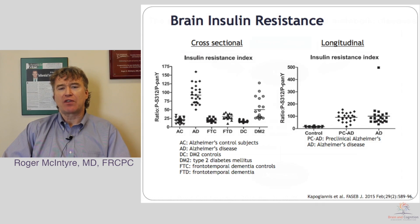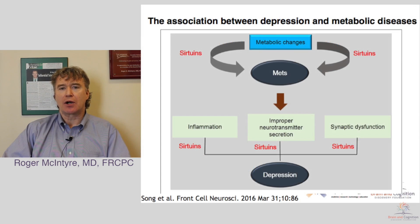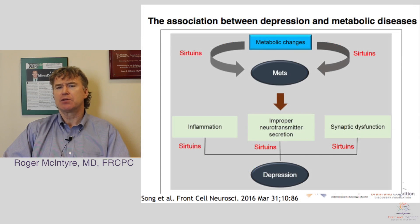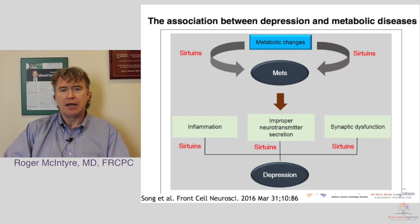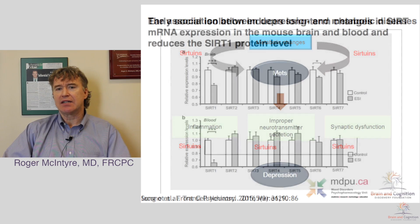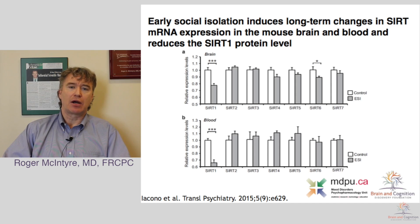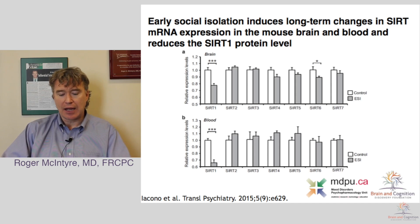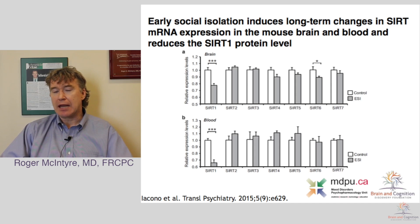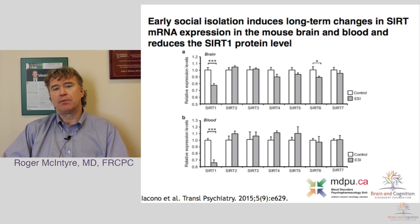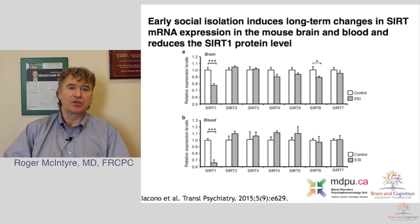Sirtuins are histone deacetylase proteins implicated not only in cellular survival and cellular aging, but also metabolism, inflammation, and the stress response. There is evidence now that sirtuin activity — at least some isoforms like sirtuin 1 or sirtuin 7 — is reduced in animals and people subjected to stress like major depression. This suggests that sirtuin enhancement could have potential beneficial effects on metabolism as well as depression.